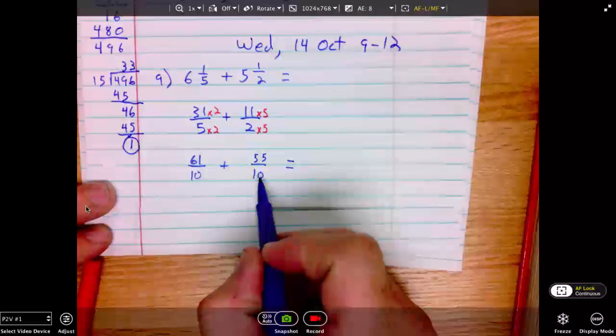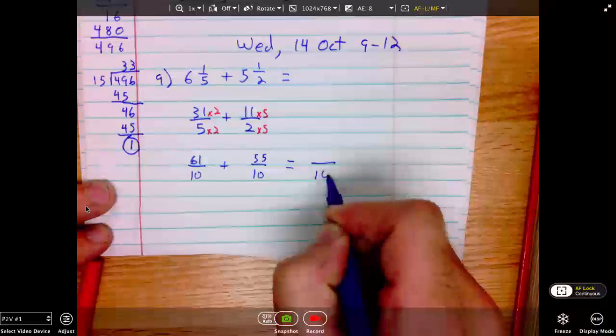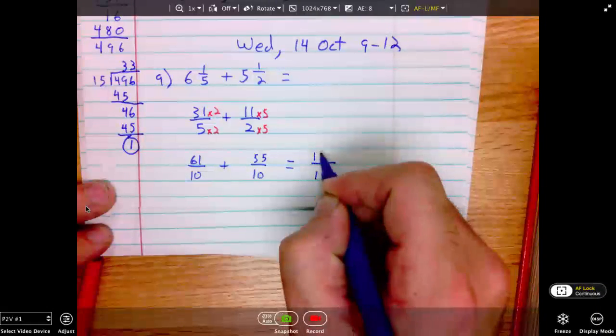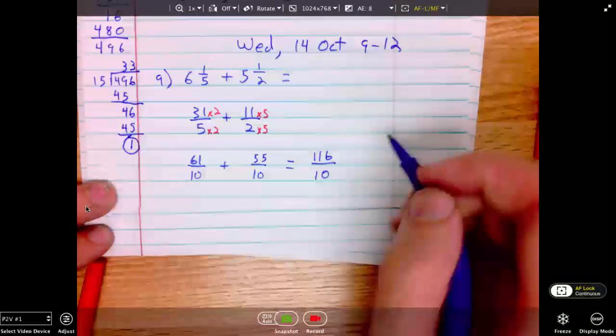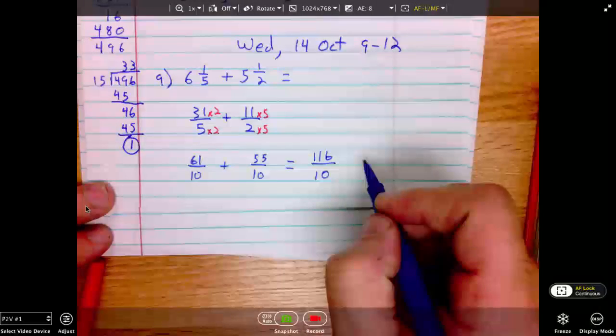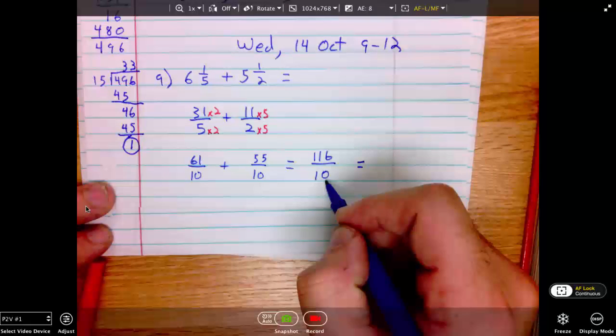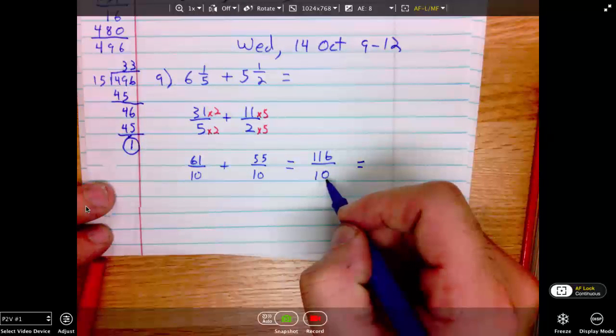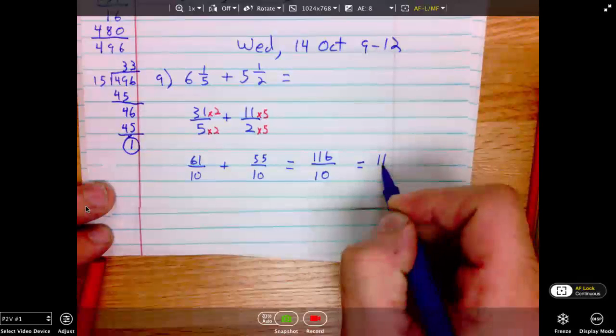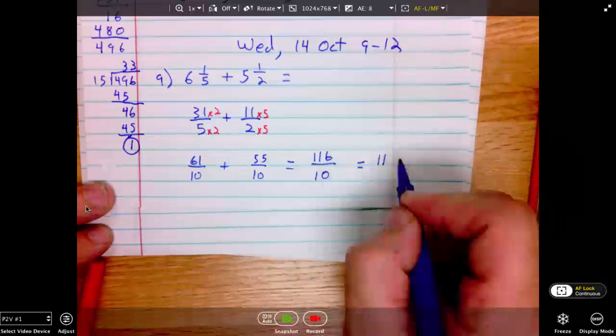Once we have the common denominator, we're ready to sum. The denominator stays the same, 10. 62 plus 55 is 116. Now, we will ask ourselves, how many times will 10 go into 116? Division by 10 is pretty easy. I know that 10 will go into 100, 10 times, into 110, 11 times. So, 11 whole times. 116 minus 110 would be 6 left over.